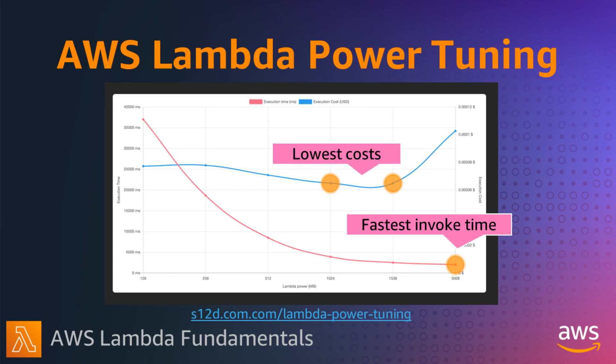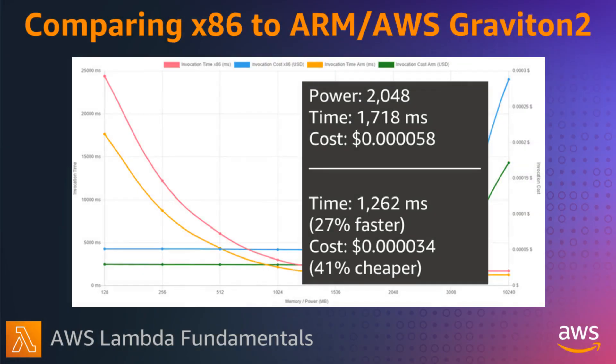You can also compare the values of two functions graphically, which is helpful to compare different functions before and after when you optimize them. This is particularly useful to compare the speed and cost of functions when looking at migrating to ARM Graviton2, as it's able to compute costs separately for both x86 and ARM. Here we can see that the ARM function version in this example is 27% faster and 41% cheaper than the x86 version, so this function would be a great choice to move over to ARM Graviton2.